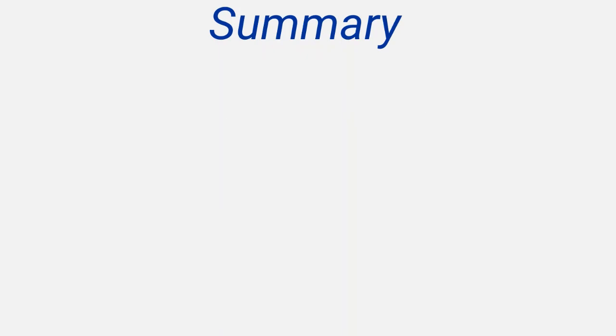To recap on the process you should follow: First, consider the context of your data, and decide which types of model might be appropriate based on the properties of that function. Using a model that fits your data values well, but whose properties are not appropriate to the context, will imply a lower level of mathematical understanding, and might therefore lead to a lower mark on that criterion.